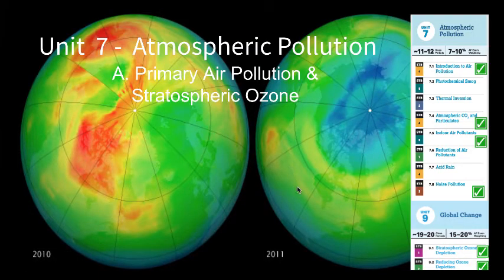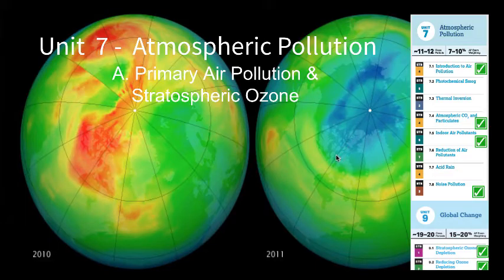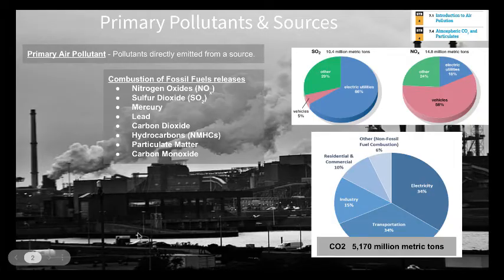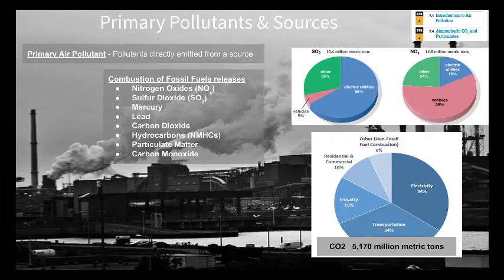Our introduction to air pollution revolves around these main concepts: CO2, indoor air pollutants, noise pollution, and general air pollution facts. To begin our discussion we'll be talking about primary air pollutants. This refers to pollutants that are emitted directly from a source, particularly burning of fossil fuels, which is the reason for the majority of the items we'll be talking about today.